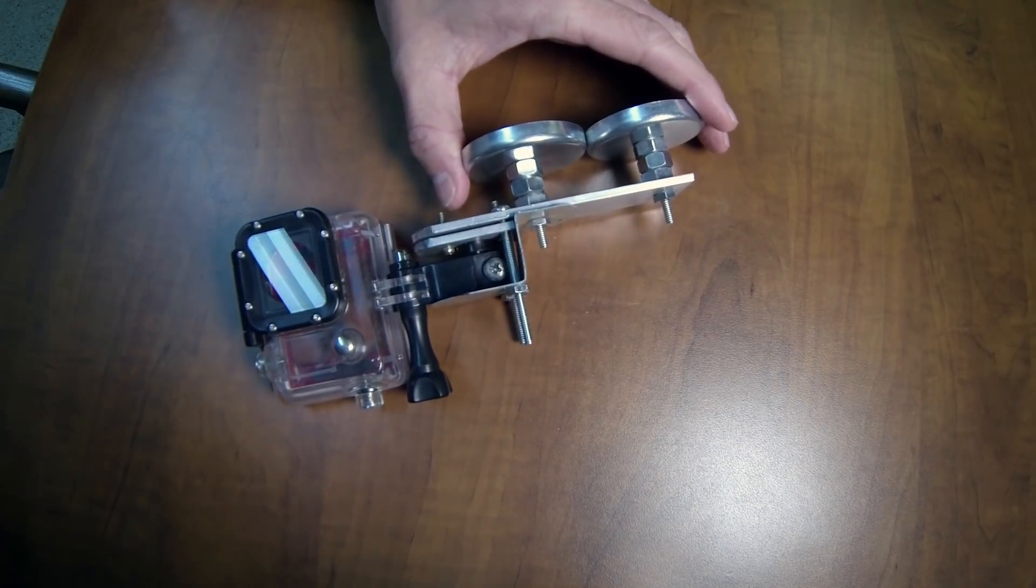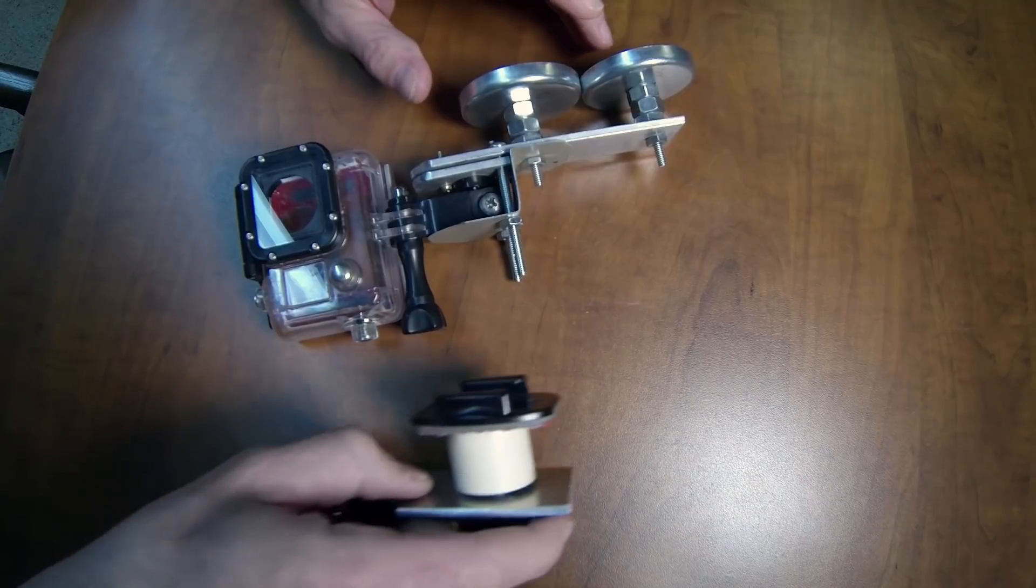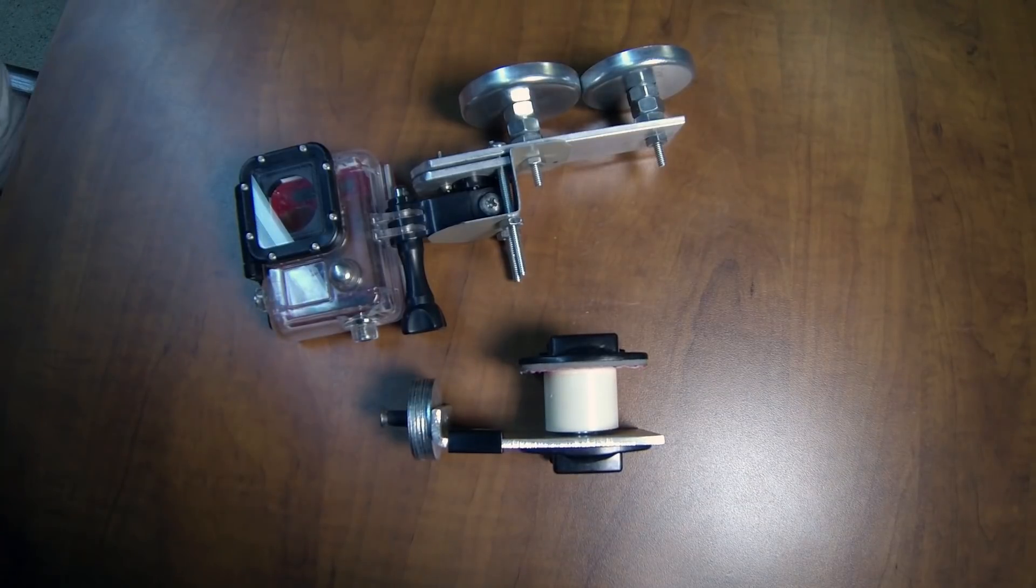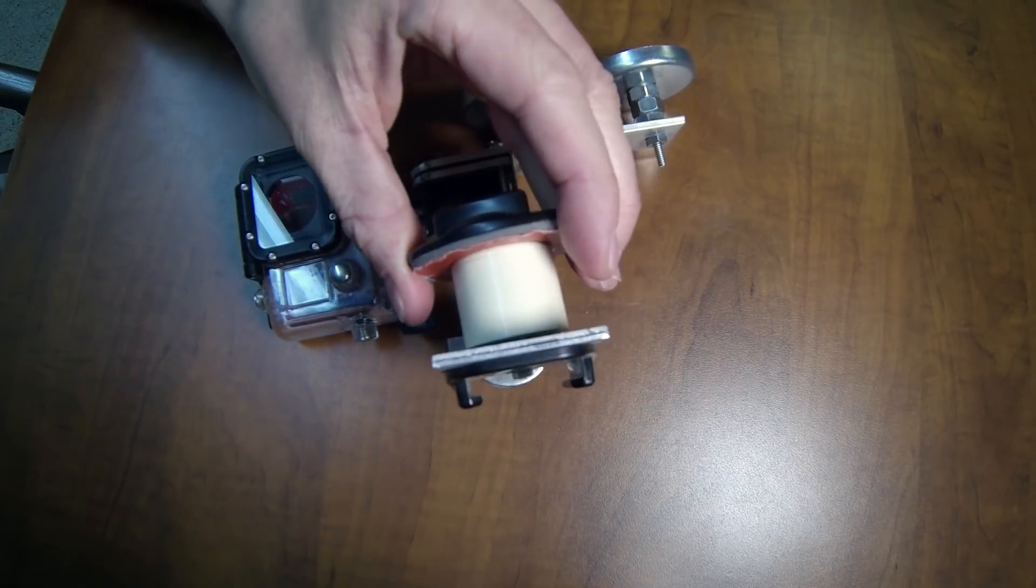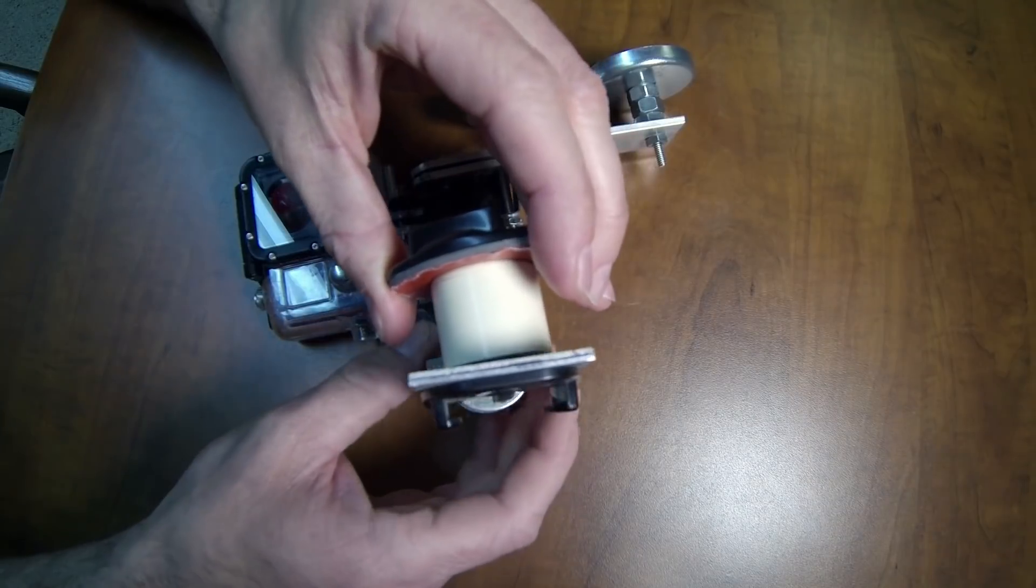This is version 2 of the mount that I just finished. Here's the first version and they both have some positive and negative aspects. Version 1 has a bearing in here so it keeps the camera pointed at the horizon by balancing it.